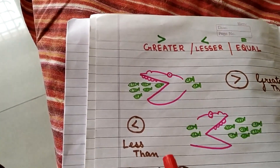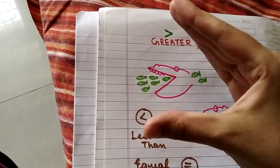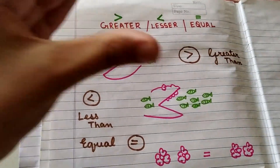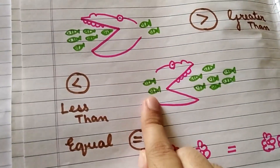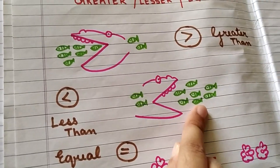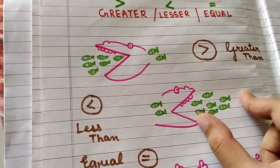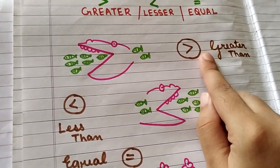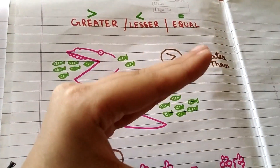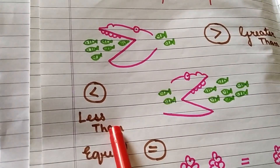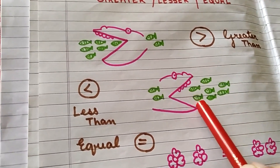Now coming to the lesser than sign. The lesser than sign is just the opposite of greater than. The first direction of the mouth was like this, and now the direction is like this — just the opposite. So for lesser than, look at these two fishes: the crocodile wants to have two fishes or many fishes, and it will go for the many fishes. So his mouth will be open on the side where there is more number of fishes. The sign in greater than is like this, whereas in lesser than the sign will be opposite — the crocodile's mouth is open on that side where there is more number of fishes.